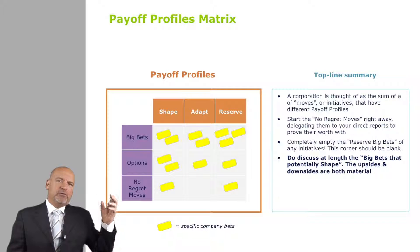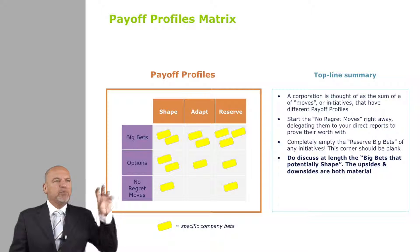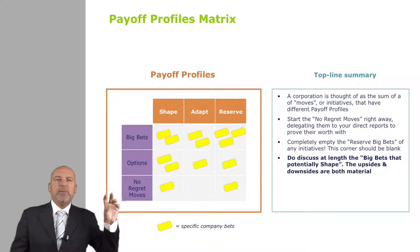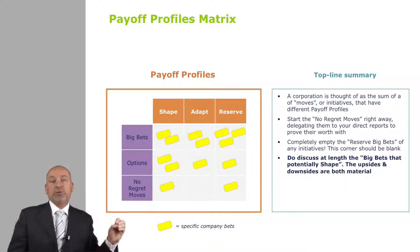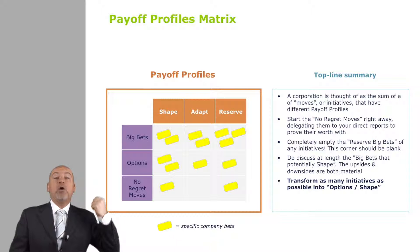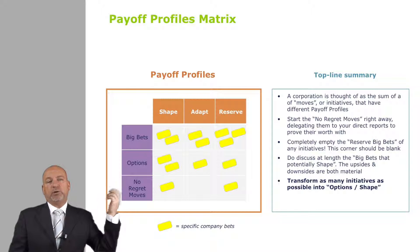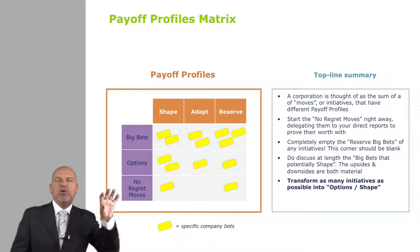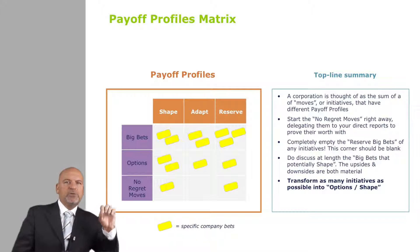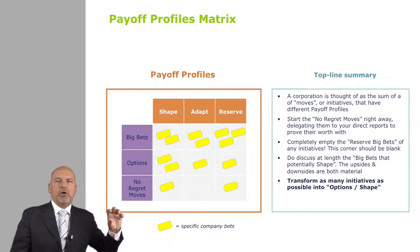The fourth action: now that you're familiar with moving post-its around, can you see how the best corner of this map — having taken off the no-regret moves — is options to shape? Because you get real positive rewards with the shaping dimension, and the options make it a bit less risky. So you look at your other post-its — the adapt big bets, the adapt options, the reserve options — and you try to shift them a little bit towards options to shape.